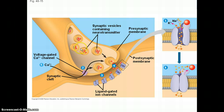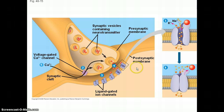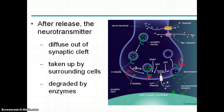Here we see that synaptic terminal: vesicles fuse, neurotransmitters are released into the cleft, and there are the receptors. What they can do is open up and allow ions to flow into the membrane, making the neuron more or less likely to polarize or depolarize.